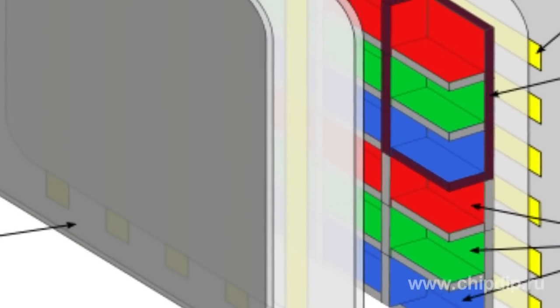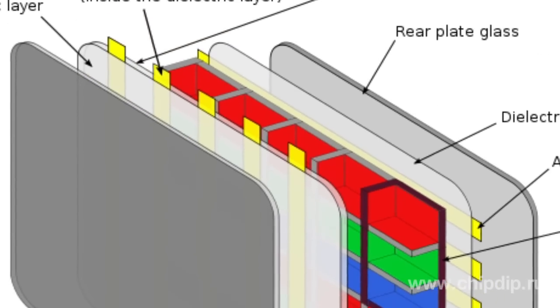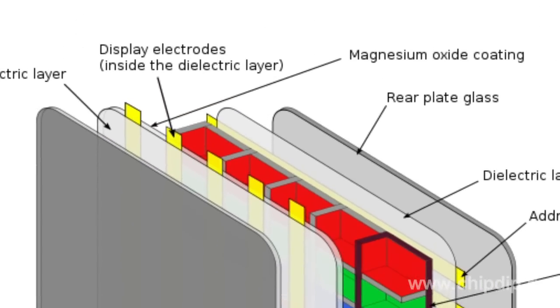Secondly, the front electrode should be as transparent as possible. For this purpose, indium and tin oxides are used, as it conducts current and is transparent. Unfortunately, plasma displays can be so large and the oxide layer may be so thin that during the flow of high current, a voltage drop across the resistance of the conductors will occur, which will greatly reduce undistorted signals.